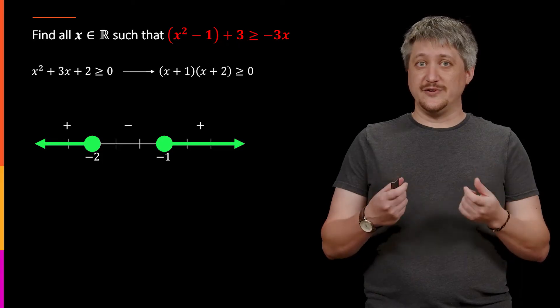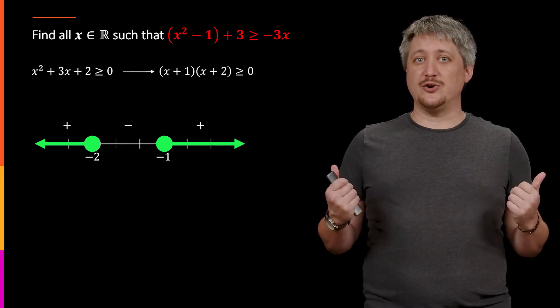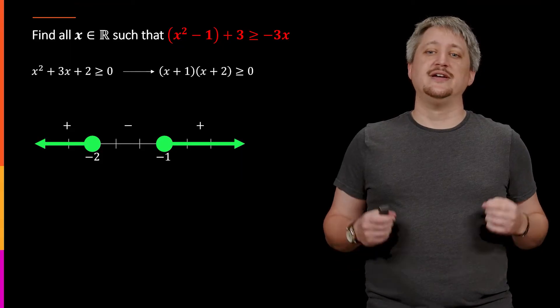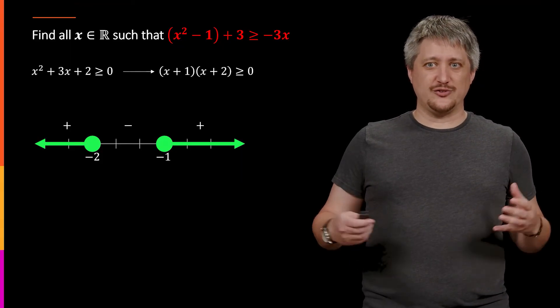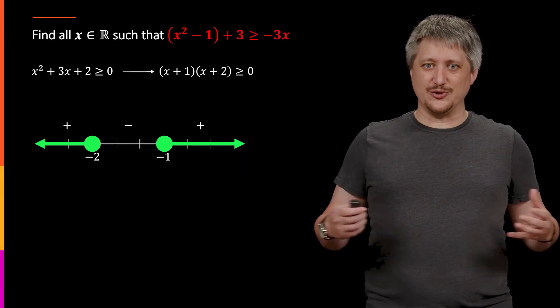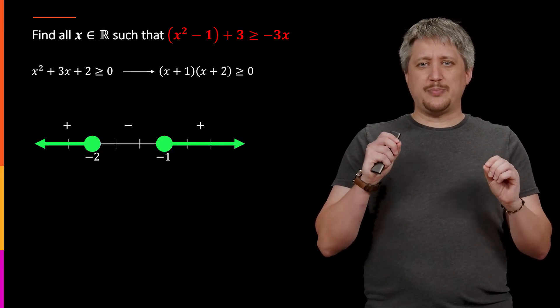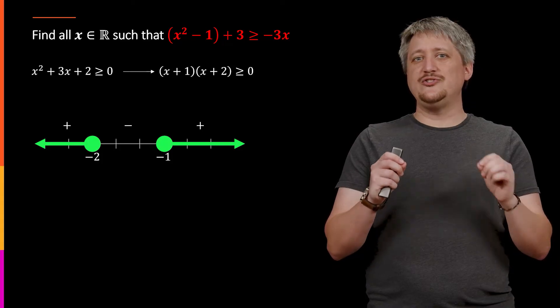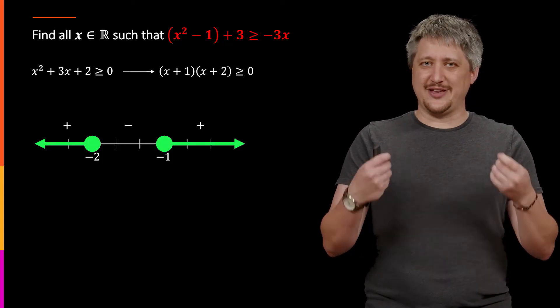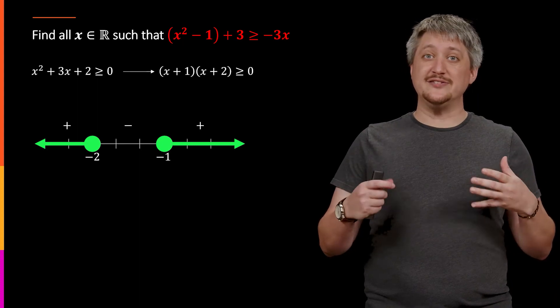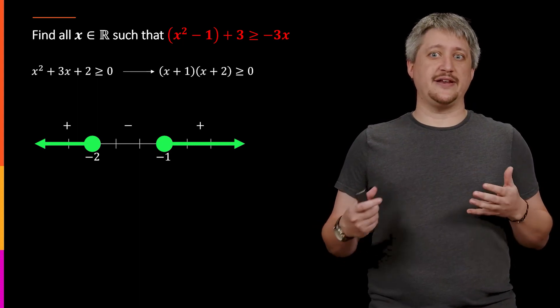So since I want to know, okay, when is it positive? Well, it's positive to the right of negative 1 and to the left of negative 2. That's my solution set. And since it's greater than or equal to 0, I want to include the 0s, negative 1 and negative 2. So I put in my filled in dots, and then the arrows going, in this case, out, so that I'm getting all of that positive region. And I have arrows at the end because there's no stop point. It just goes on forever and ever.